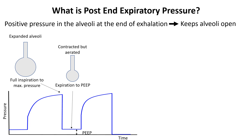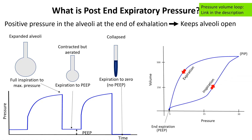If the pressure at the end of expiration somehow became zero, the lungs would fully collapse, leading to atelectasis and impaired oxygenation. A similar pattern is observed in the pressure-volume loop, where the curve does not return to zero, indicating the maintenance of lung volume.